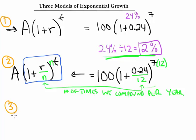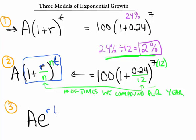We saw in class that this value approximates Euler's number e — the natural growth factor. It's about 2.718, an irrational and very special number. So our third formula, for continuous interest, uses the principal amount with growth factor e raised to the rt power: A = Pe^(rt).